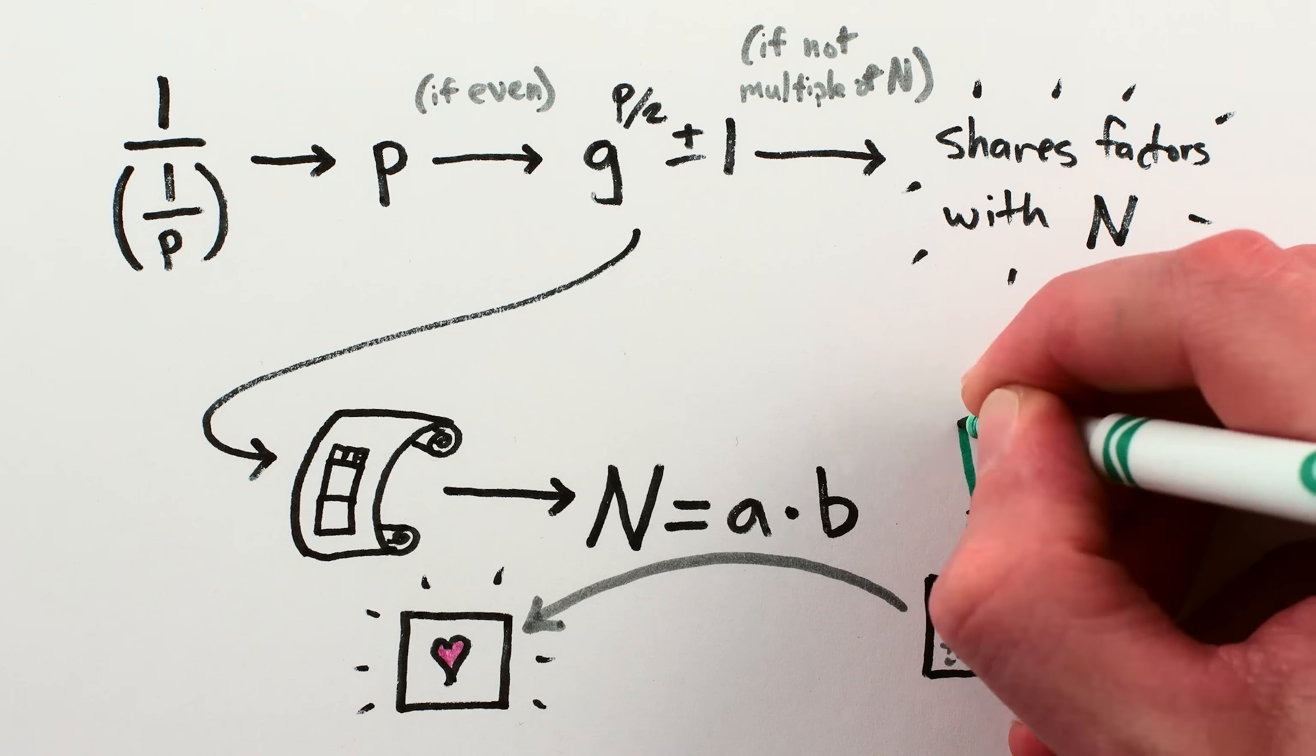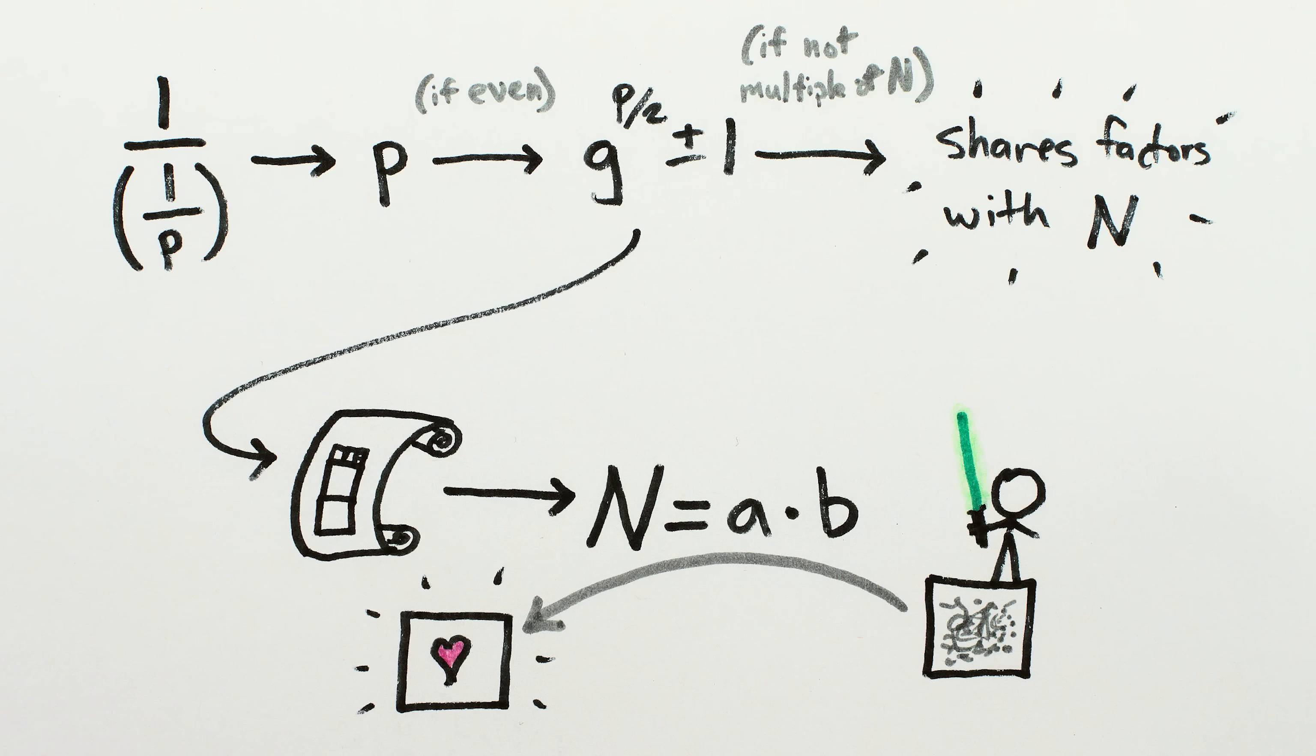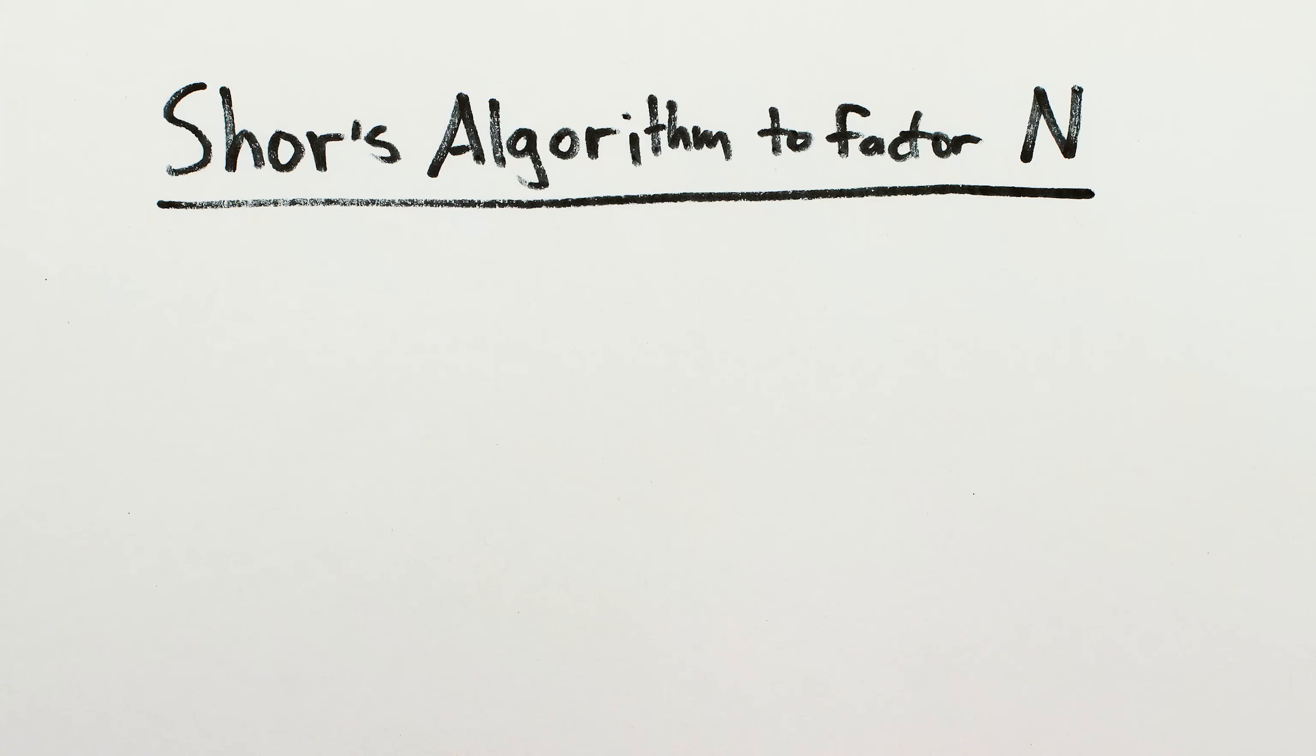And that is Shor's algorithm, the lightsaber that can be used to cut through locks on the internet. As complicated as this clearly is in practice, and we've glossed over a ton of details, it's surprising to me how simple the core structure of Shor's algorithm actually is.